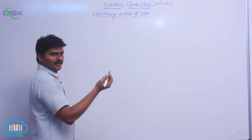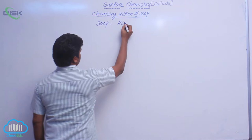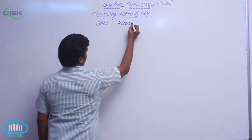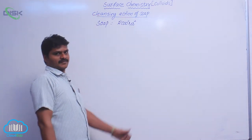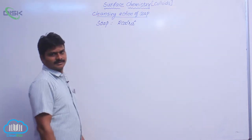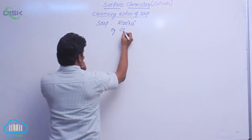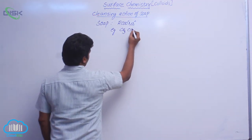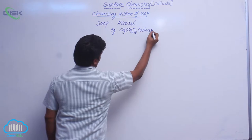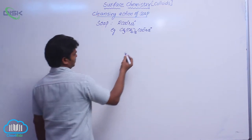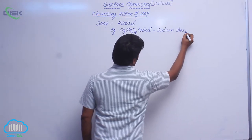The general formula for soap is R COO⁻ Na⁺. Generally, soaps are the sodium or potassium salts of long chain fatty acids. For example, sodium stearate — the formula for sodium stearate is CH₃ (CH₂)₁₆ COO⁻ Na⁺. This is sodium stearate.